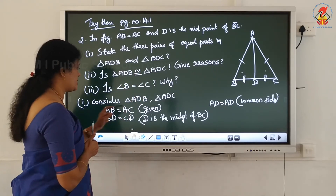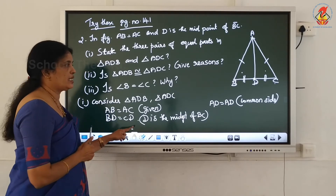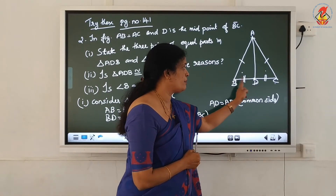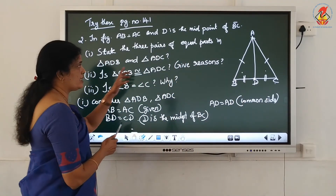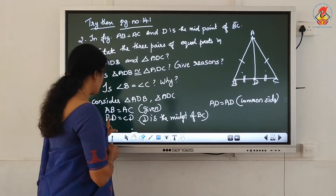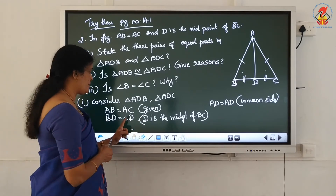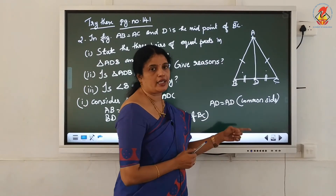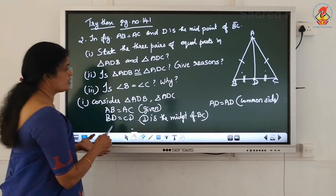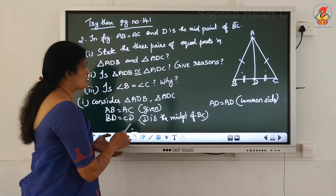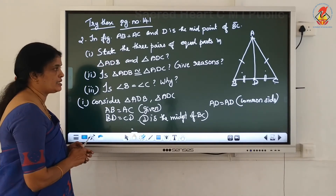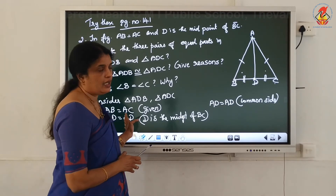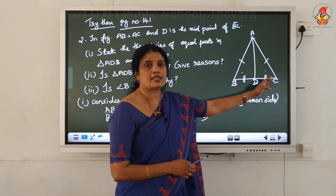The 3 equal parts in triangle ADB and triangle ADC are: AB equal to AC, already given in the question; BD equal to CD, because D is the midpoint of BC - write the reason inside the bracket; AD equal to AD, common side. These are the 3 equal parts of triangles ADB and ADC. Therefore, the 3 parts already written show that these 2 triangles are congruent.